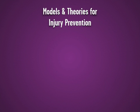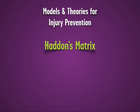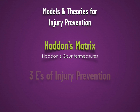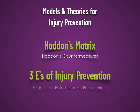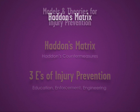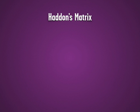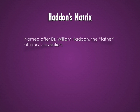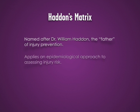Models and theories for injury prevention include Haddon's matrix and the three E's of injury prevention. We'll look at each of these in turn. Haddon's matrix is named after Dr. William Haddon, considered to be the father of modern injury prevention. It uses an epidemiological approach to assessing injury risk.